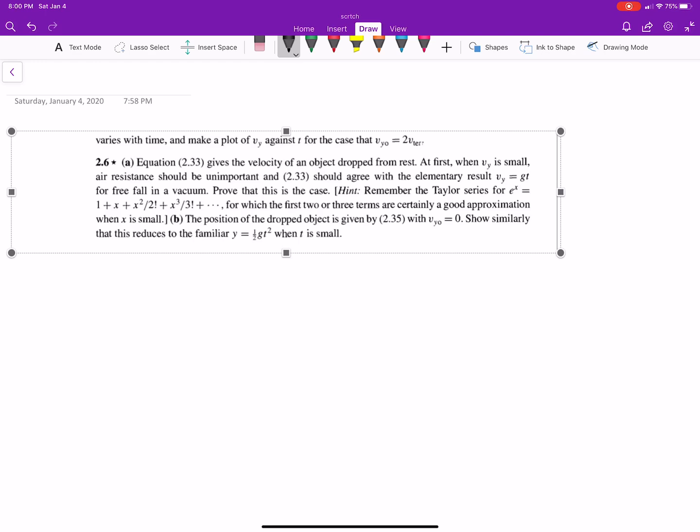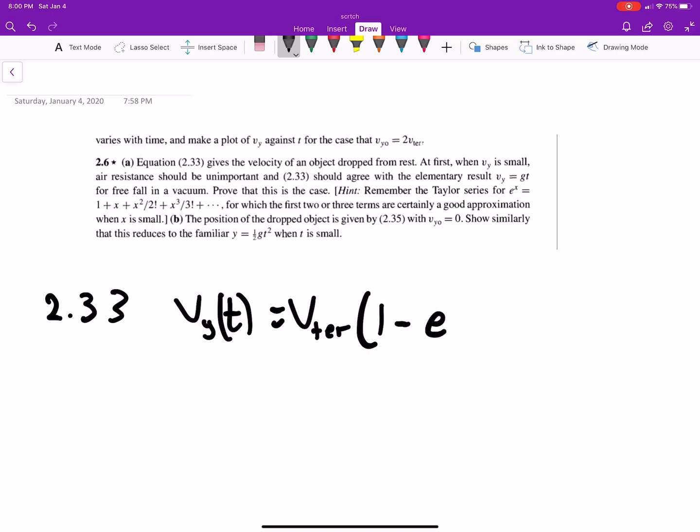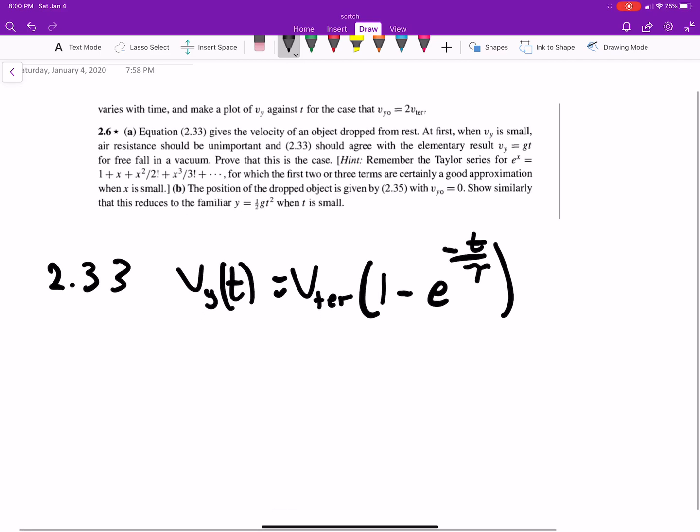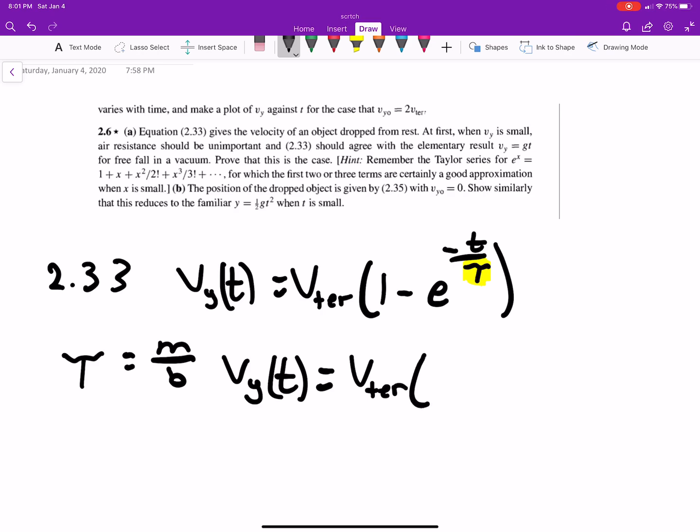So first off, what is equation 2.33? I don't label it like that, but we did go over it in the lecture video. And all that is, is velocity in the y direction equals v terminal times 1 minus e to the minus t over tau. And if you remember, tau is just equal to m over b. So we'll also think of this as velocity equaling v terminal times 1 minus e to the minus t, and then we're just going to flip it because the tau is in the denominator.